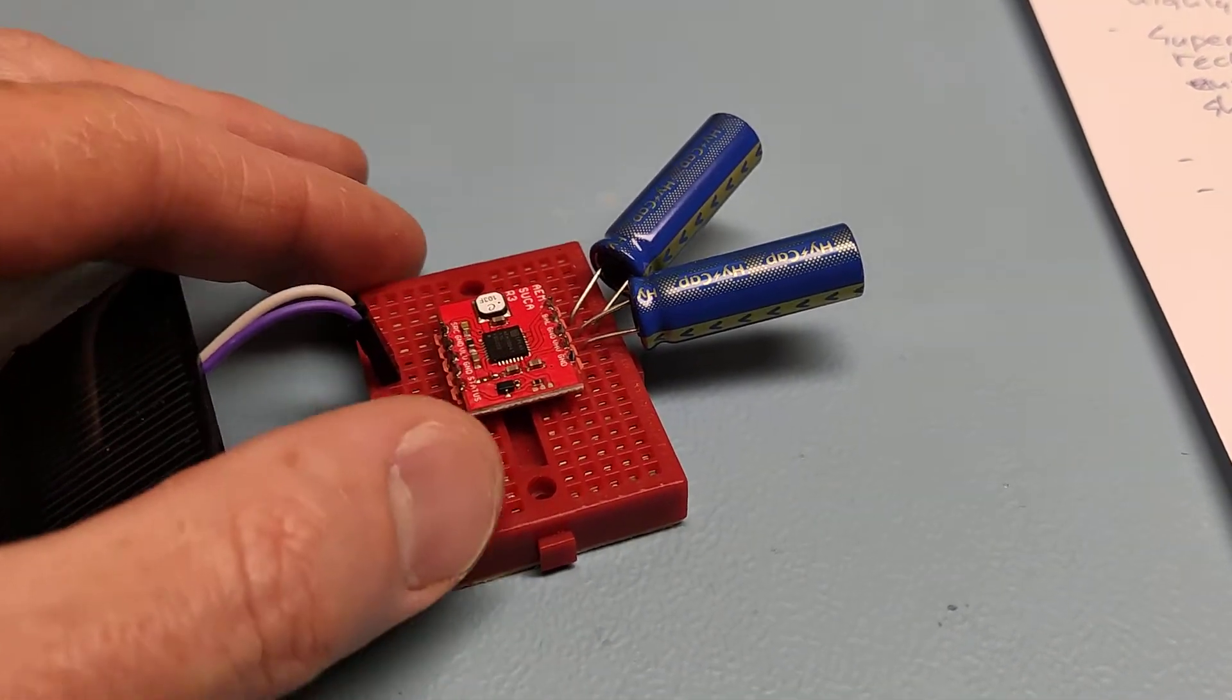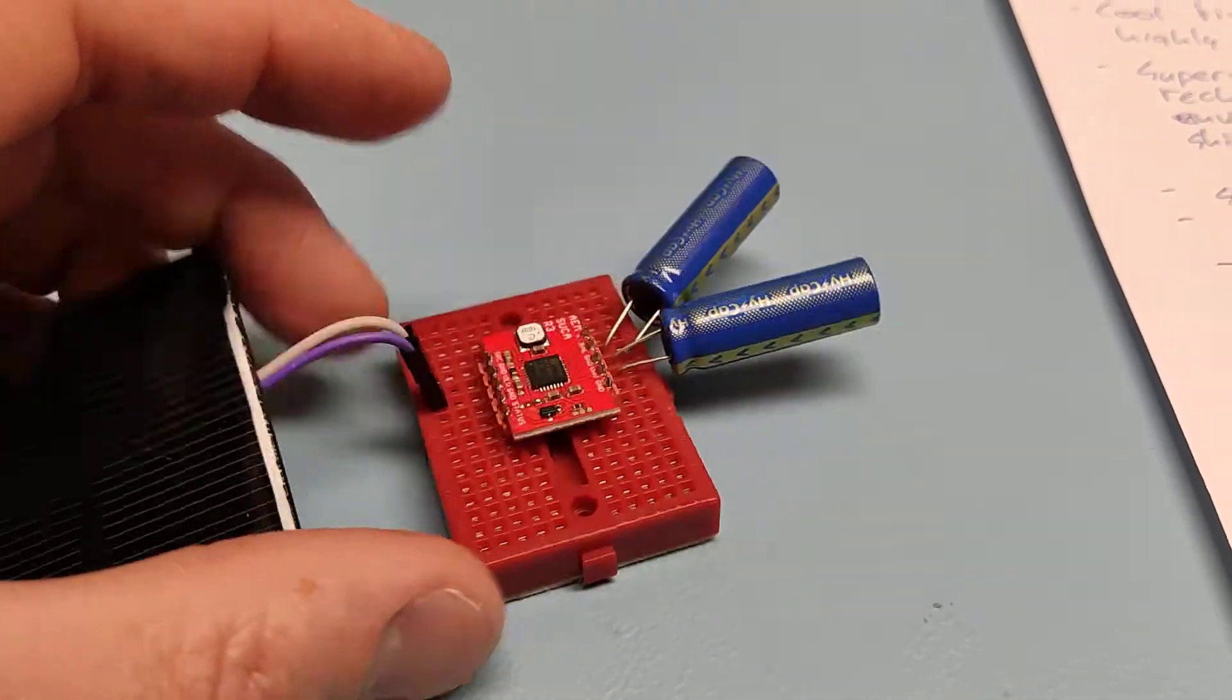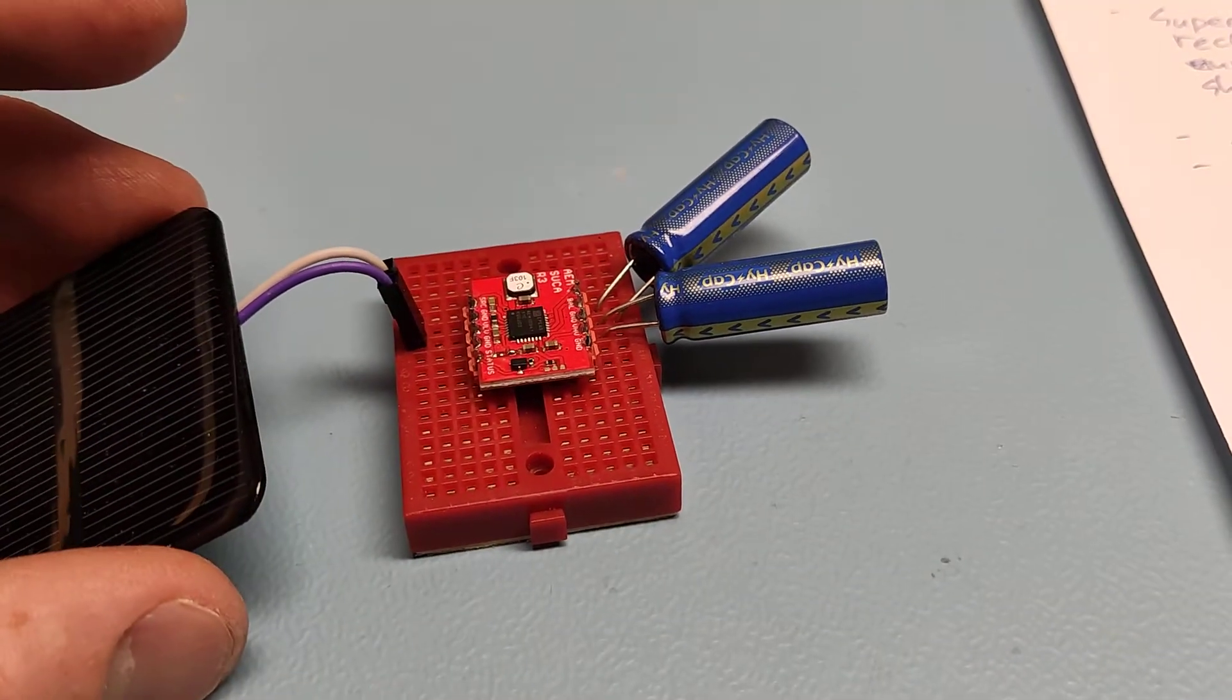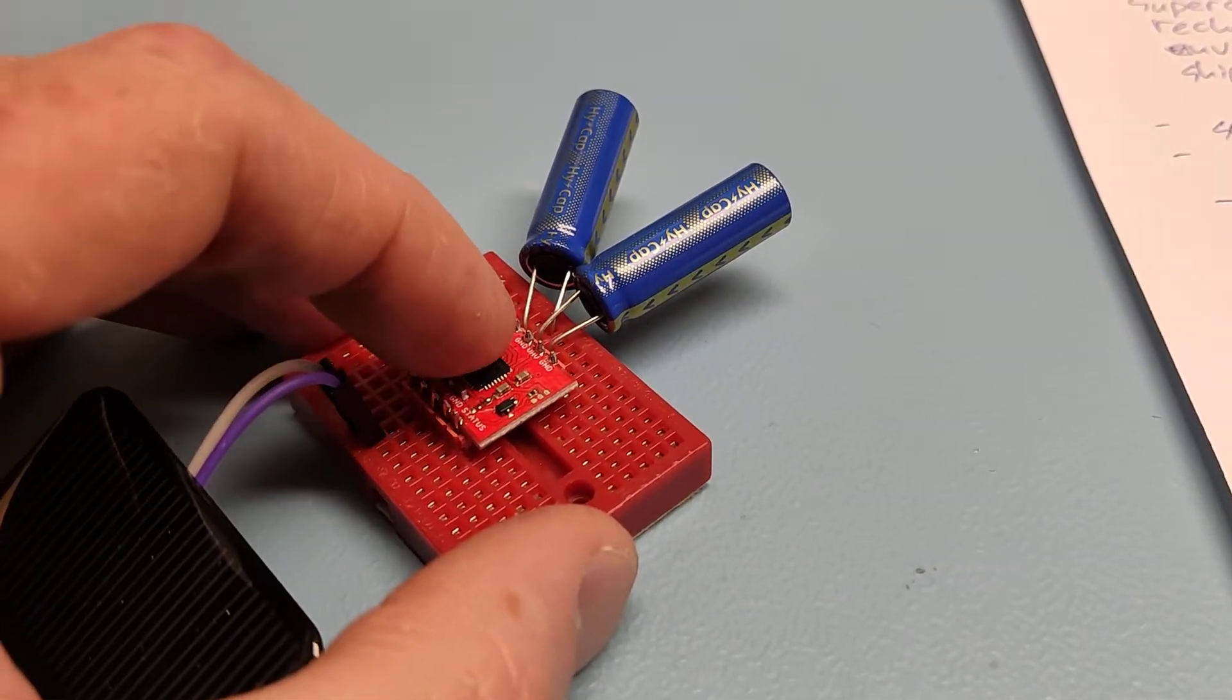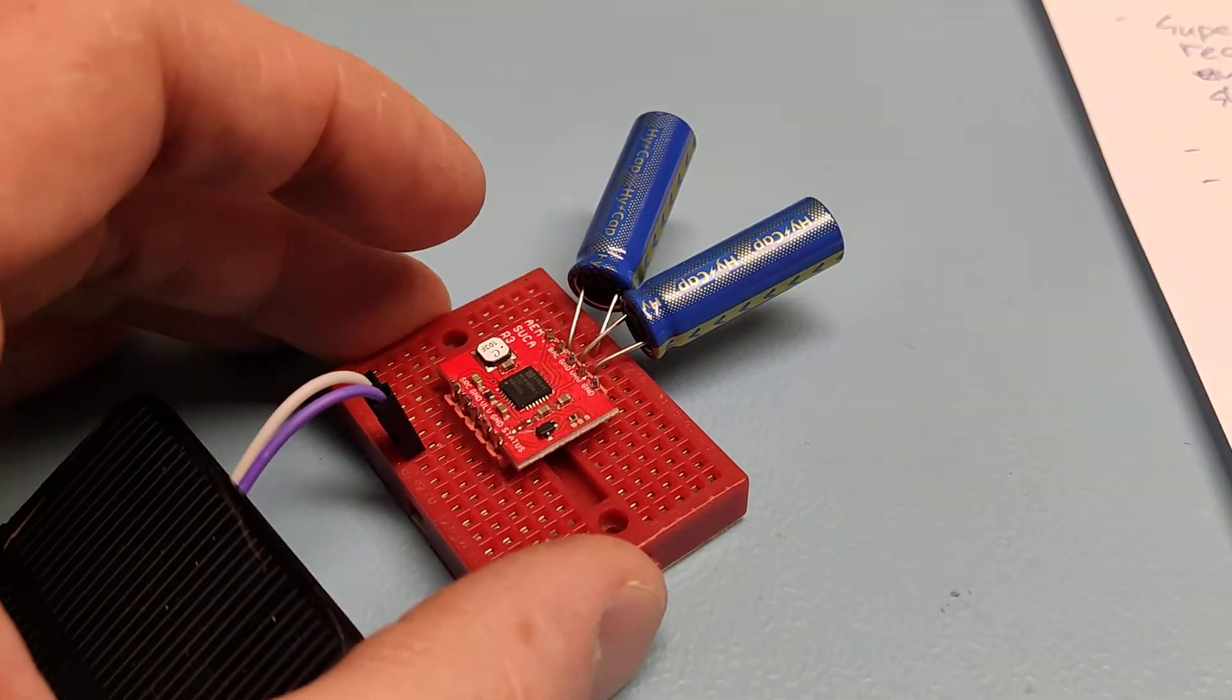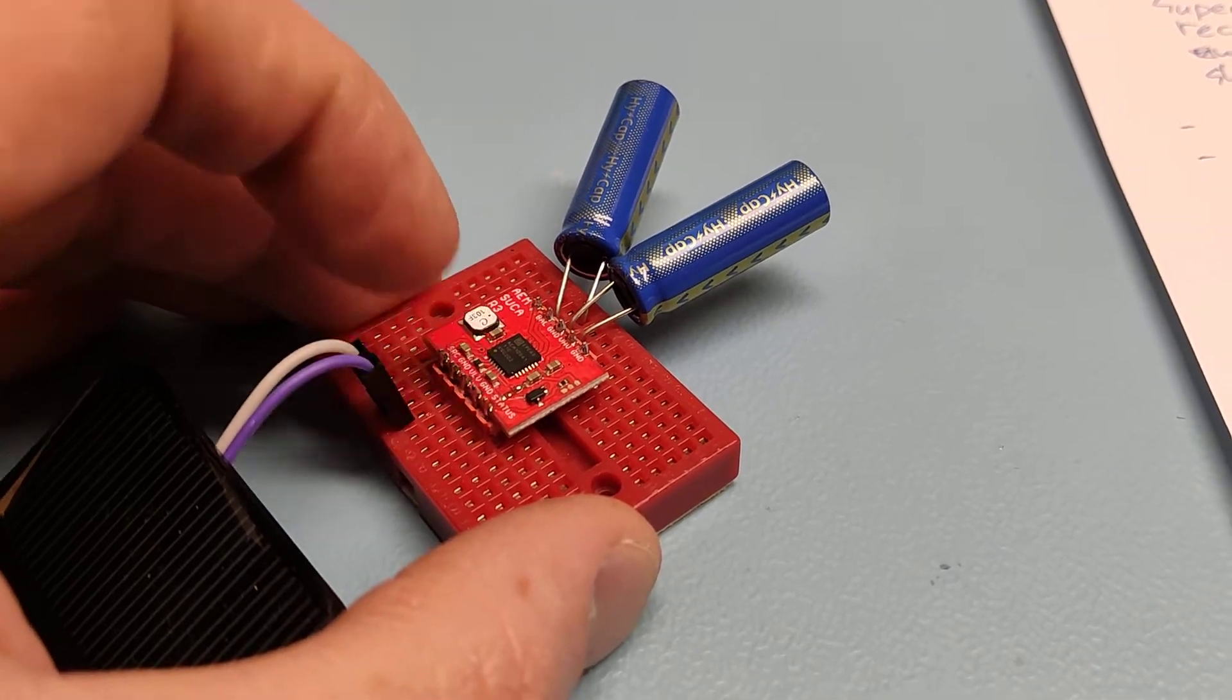The solar input accepts voltages up to 5V. On the 3.3V output it can deliver 80mA, and on the 1.8V output it can deliver 20mA.